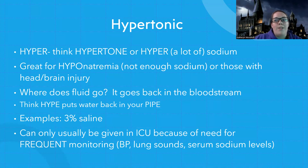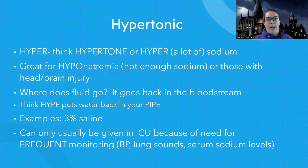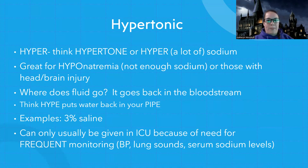So where does that fluid go? It goes back in the bloodstream. Here's my mnemonic: think 'hype puts water back in your pipe.' So with hypertonic, fluid is moving back into the bloodstream. To summarize fluid movement: hypotonic — it's going into the pot, into the cells. Isotonic — it's staying in the pipes. Hypertonic — hype puts water back in your pipe, so it's going back in the bloodstream. With hypertonic and hypotonic, fluid is moving; with isotonic, it's staying in the same place.